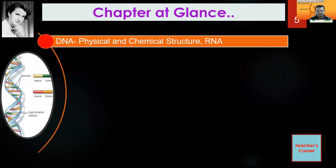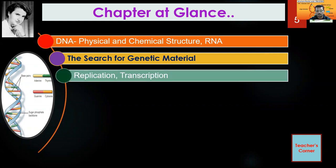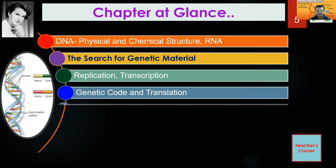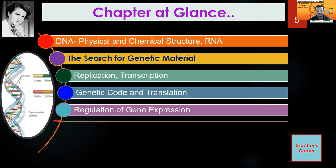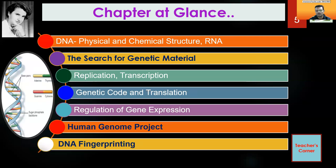The chapter has certain sub-components: DNA physical and chemical structure, RNA, then the search for genetic material and replication, transcription in consonance with the central dogma concept, the genetic code and translation, regulation of gene expression, the human genome project, and DNA fingerprinting. This is a very important chapter as far as board exams are concerned. The weightage of unit number two is very good, and this time evolution has been omitted, so you need to focus hard on this chapter.